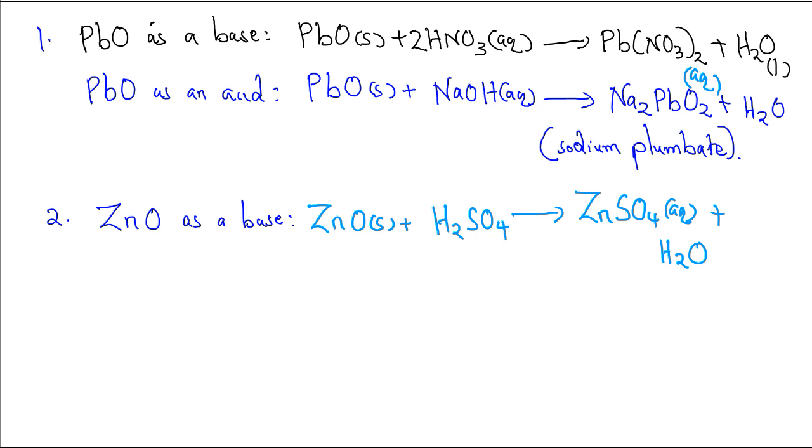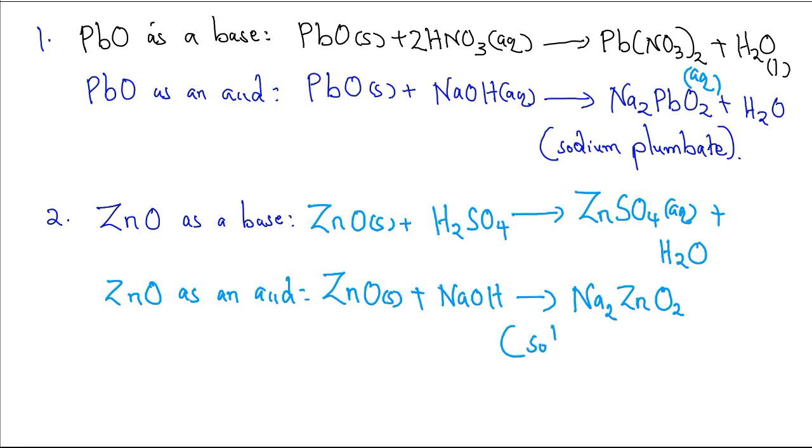Zinc oxide as an acid: zinc oxide plus sodium hydroxide gives sodium zincate, that is sodium zincate plus water.